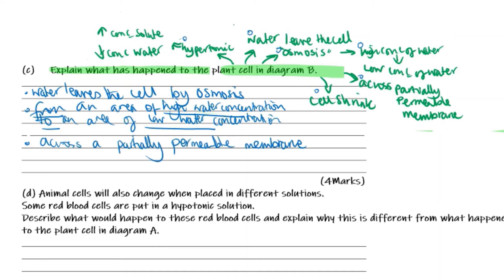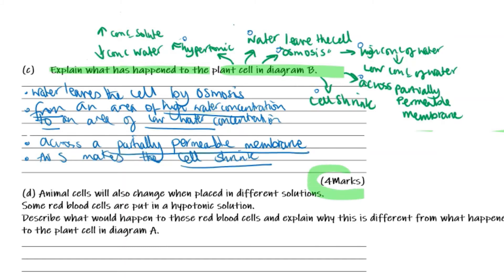This question is worth four marks and needs four key points. We have more than four points here: water leaves the cell by osmosis, from an area of high water concentration to low water concentration, across a partially permeable membrane, and the cell shrinks. We only need four points out of the five.